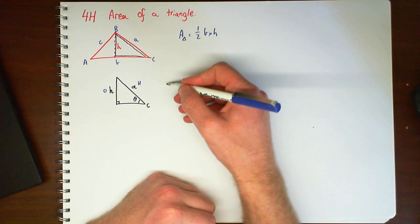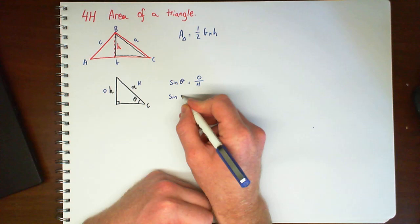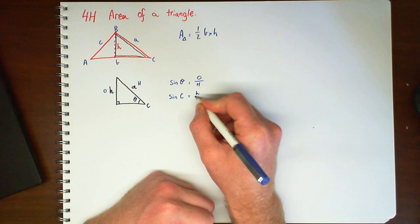I would be using sine of theta, opposite over hypotenuse. So I would have sine of C, depending on what angle C is. I've got little h over A,